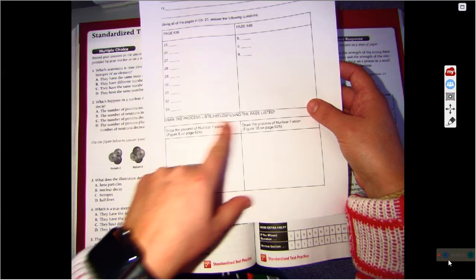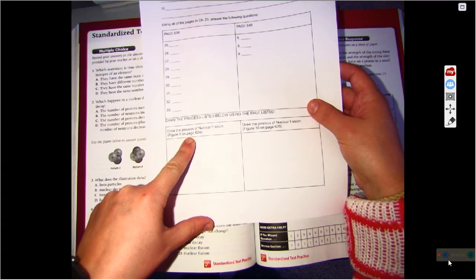Now, the last thing says draw the process listed below using the page listed. So we're going to draw nuclear fission. That says page 624.